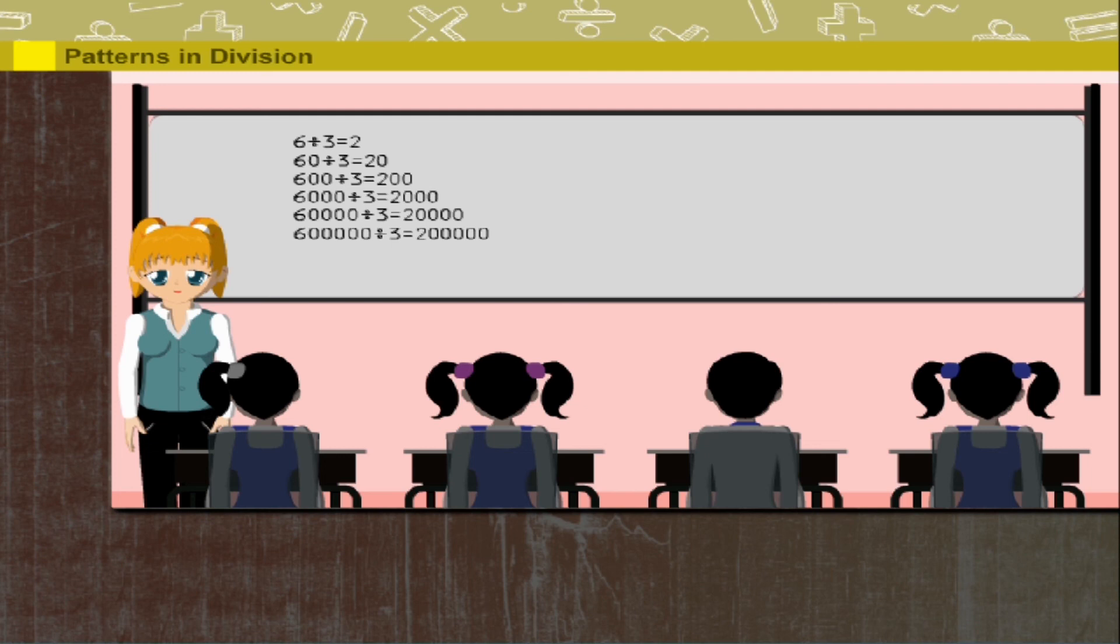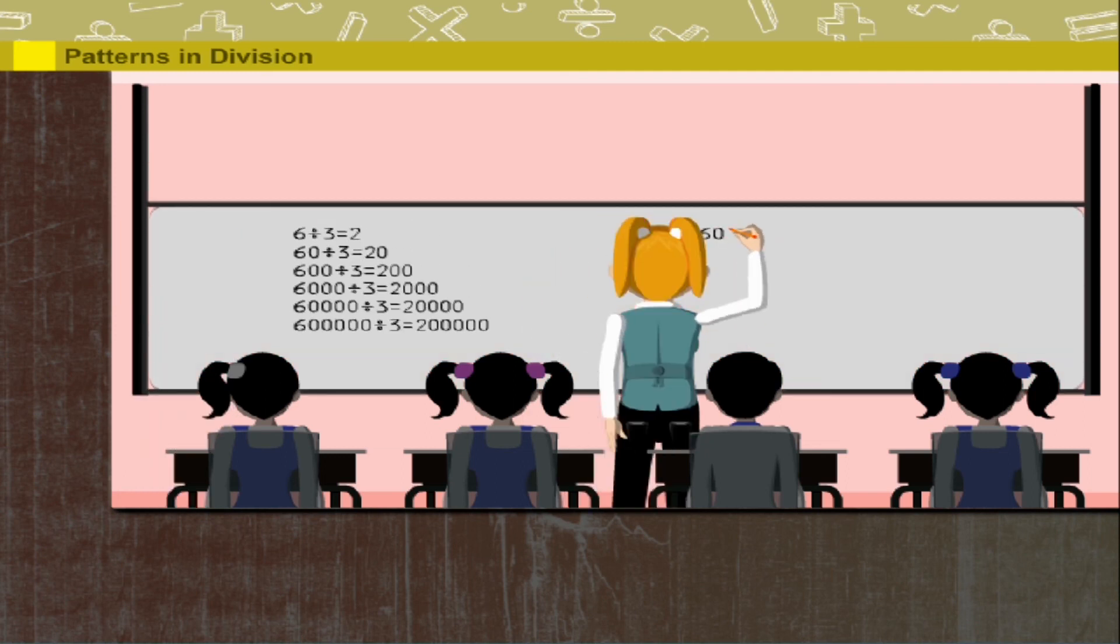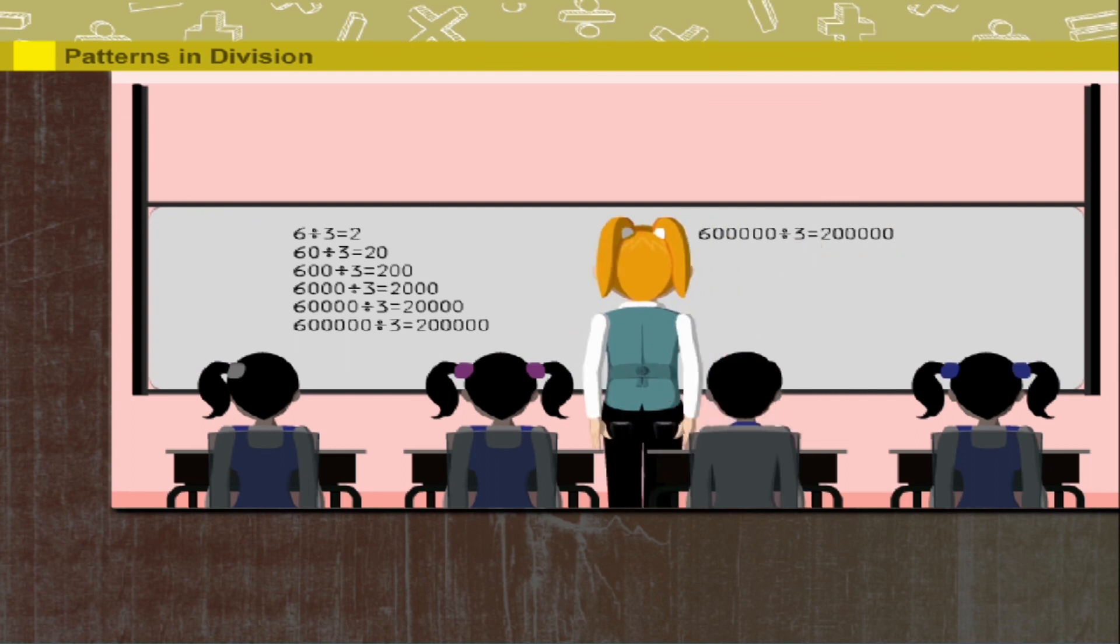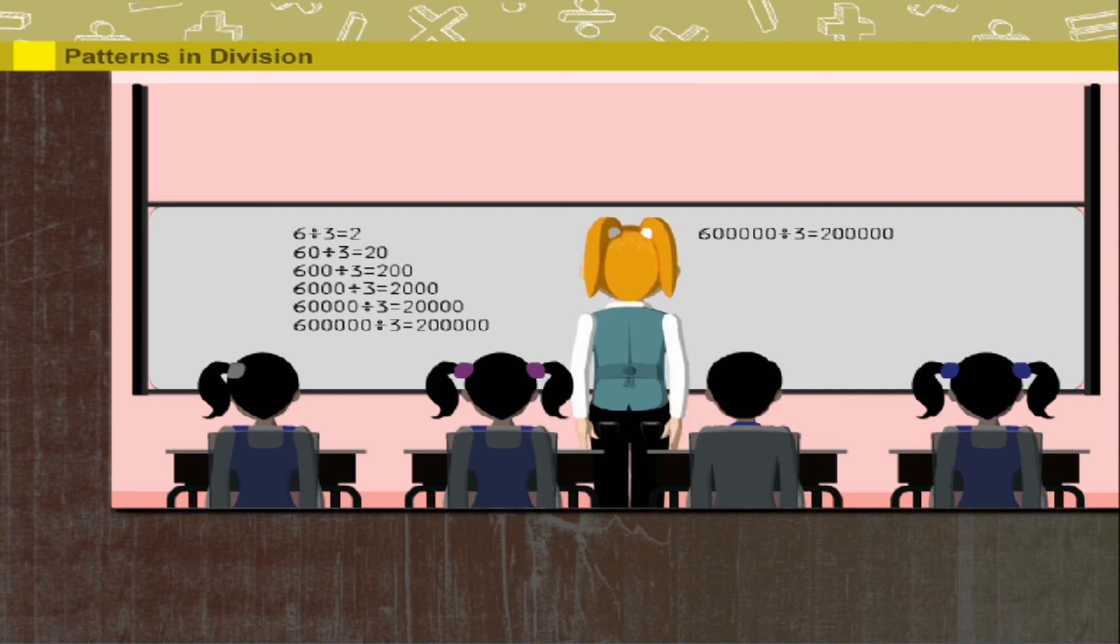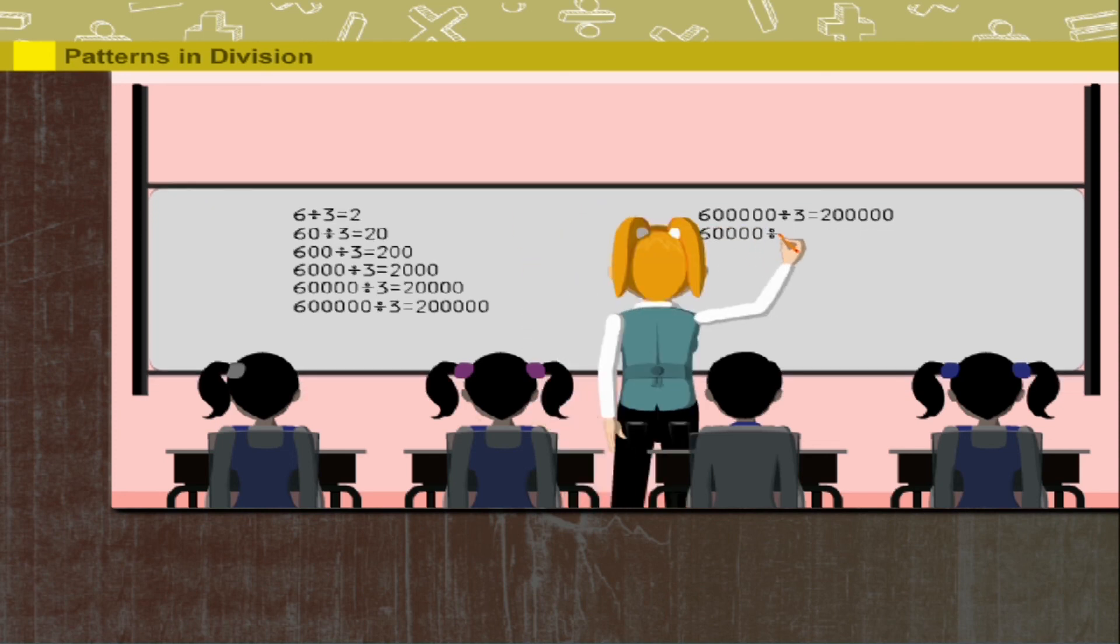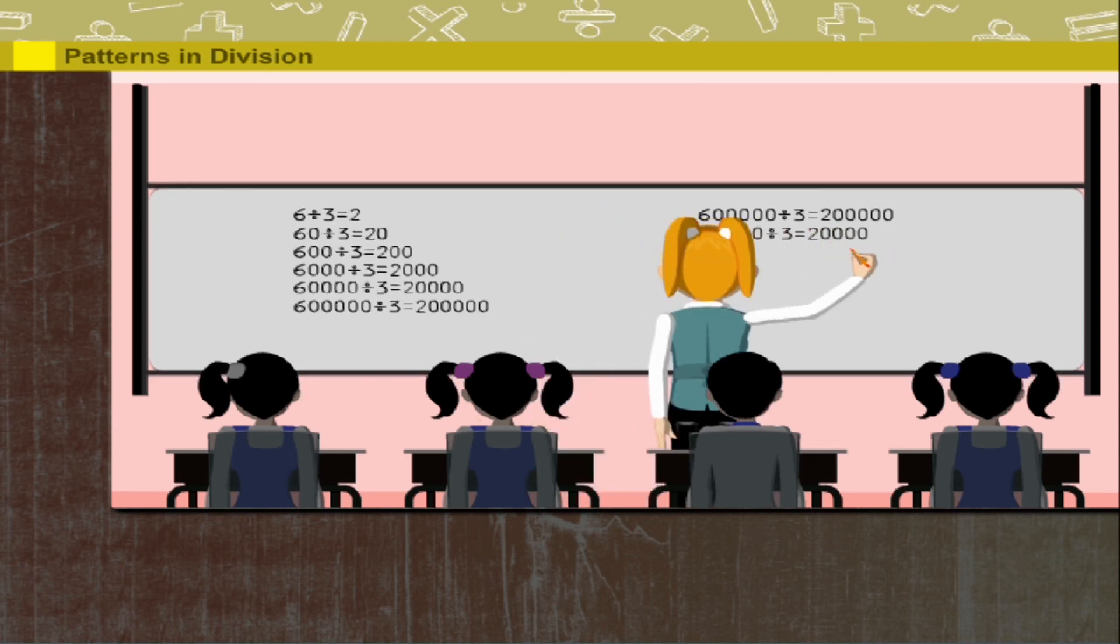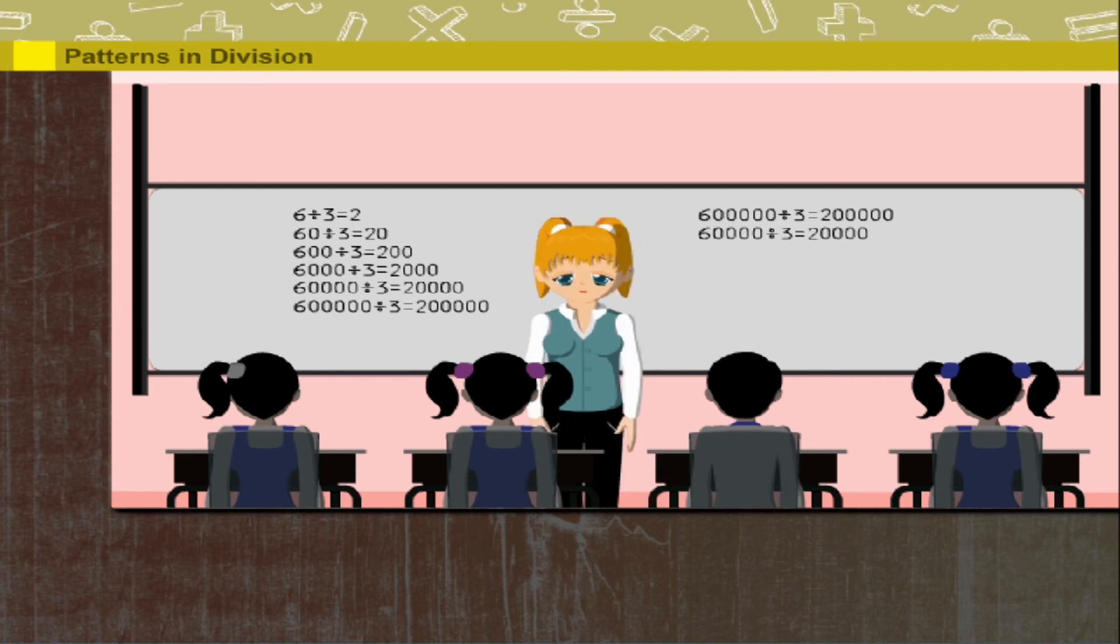Teacher Nancy now reverses the pattern in descending order. She begins by 600,000 divided by 3 is equal to 200,000. She asks the class, 60,000 divided by 3 is equal to 20,000. In the same way, you get 2,000, then 200, then 20, and finally 2.